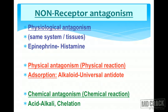Non-receptor antagonism: two drugs produce opposite effects without acting on the same receptor. Physiological antagonism occurs when two drugs have opposite effects on the same physiological system — for example, epinephrine produces bronchodilation and raises blood pressure, while histamine decreases blood pressure and produces bronchospasm. Chemical antagonism involves opposite chemical properties — acid-base neutralization or chelation. Physical antagonism involves adsorption, e.g., activated charcoal adsorbing an alkaloid in the stomach.